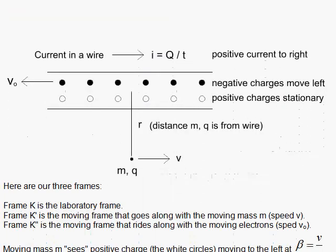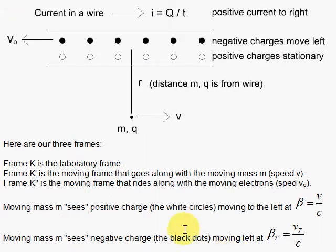We have three frames of reference we need to focus on. The K frame is the laboratory frame, the frame in which the wire is at rest. The K prime frame is our usual frame moving at speed V down the x-axis, and that's the speed for the charge Q. The K double prime frame is the frame in which the electrons are moving, and that's moving at speed V naught with respect to the laboratory.